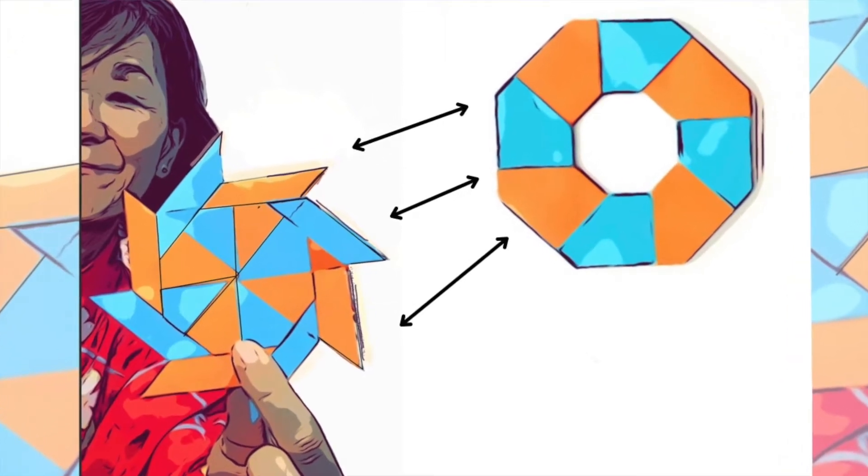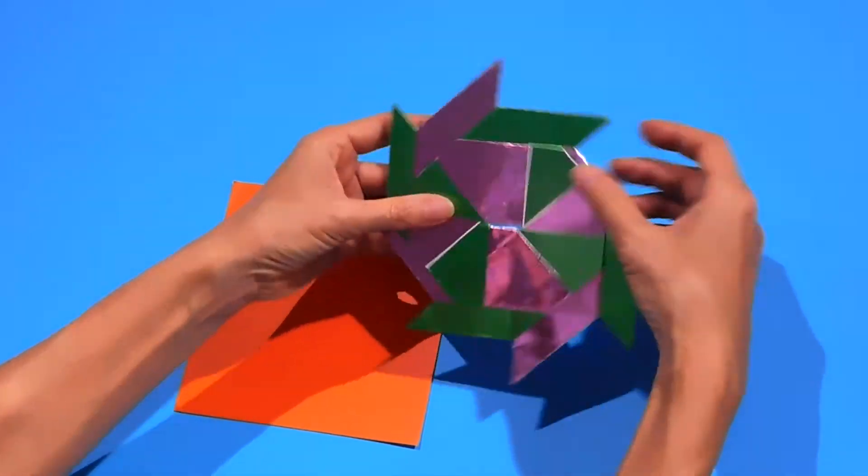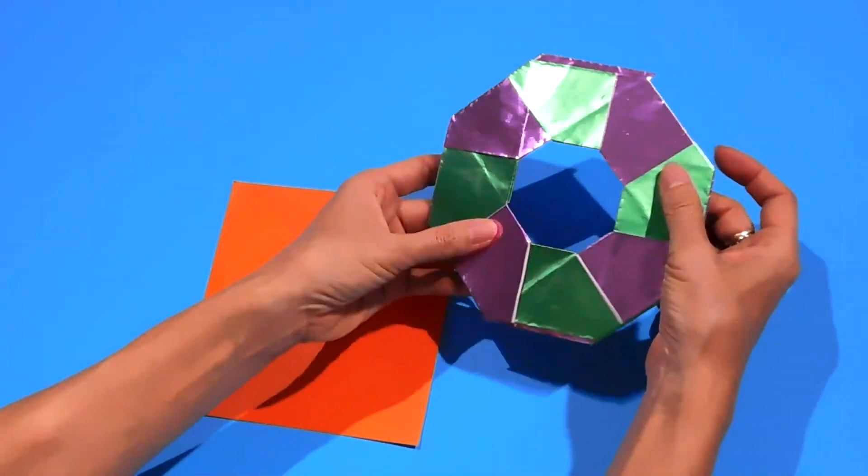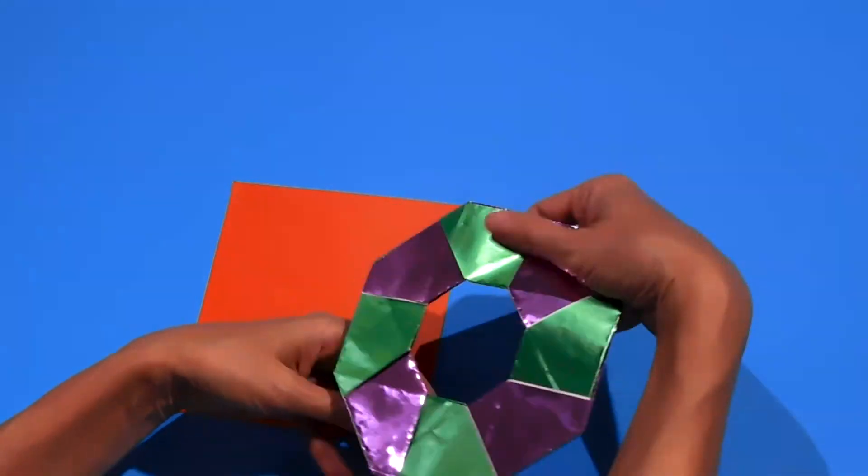Okay, you're started. I call this origami transformer and in this shape you can use it as a frisbee.